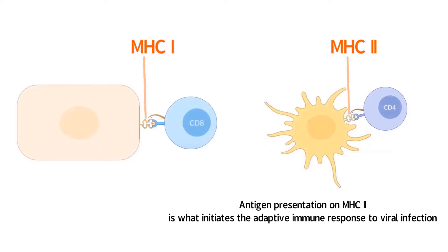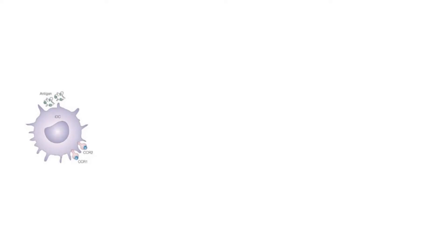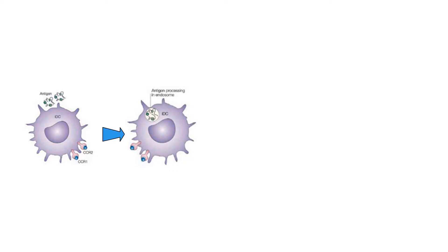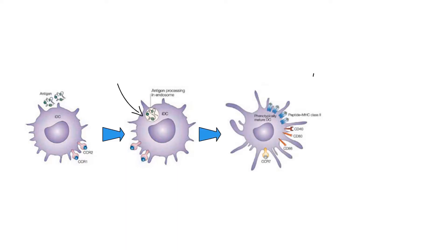MHC-2 is normally only present on certain cells of the immune system, and mainly on dendritic cells. When a viral infection has occurred, the virus or viral proteins, including viral antigen that are circulating through the blood and tissues, can be engulfed by dendritic cells. Now that the viral antigen is present in the cytoplasm of the dendritic cell, the dendritic cell can load the viral antigen onto MHC-2 and present the viral antigen.